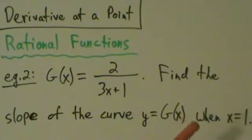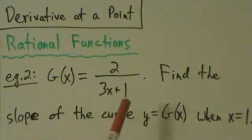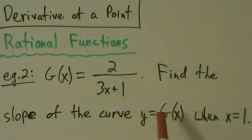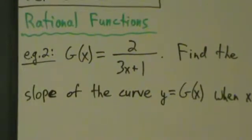So what does that mean? Remember a few videos ago we talked about how the slope of the curve is the same thing as the slope of the tangent line, which is just the same thing as the derivative. So just like all the questions we've been looking at so far, this is asking us to find the derivative. And in this case, it's when x = 1. So let's go ahead and do that.